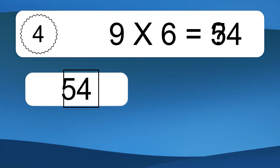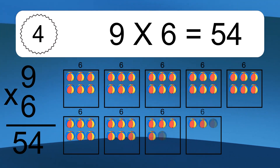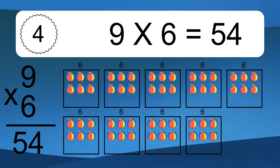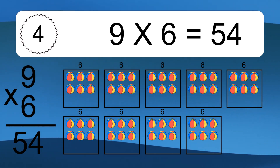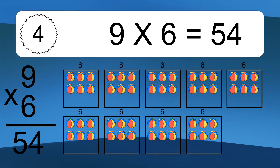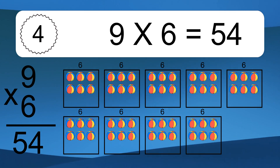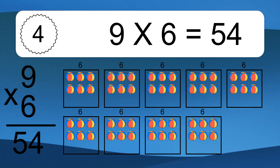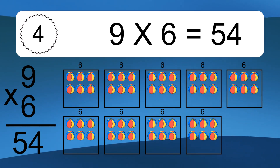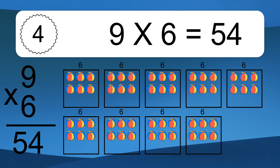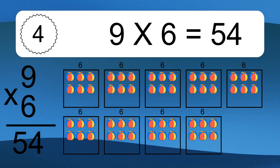9 times 6 equals what? 9 times 6 equals 54. We have 9 boxes, and each box has 6 colorful balls inside. If you count all the balls in all the boxes together, you will have 9 times 6 balls. This equals 54 balls.